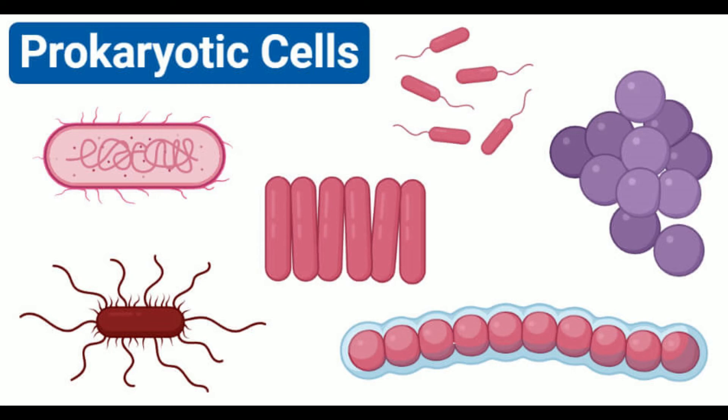Cytoskeletal Structures: Many eukaryotic cells have cytoplasmic projections like flagella and cilia that are involved in movement, feeding, and sensation. These structures are mainly composed of tubulin proteins supported by microfilaments and microtubules. Cytoskeletal structures are also present in the cytoplasm that provide shape and support to the cell.